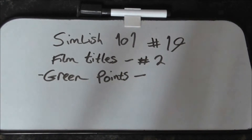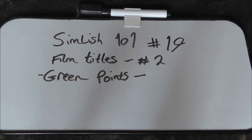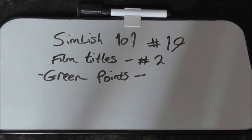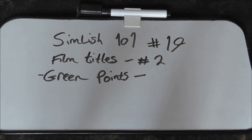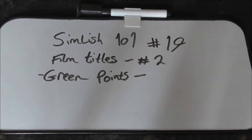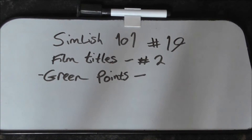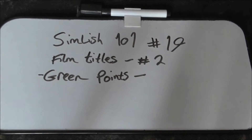Hello everyone, welcome back to Simlish 1-1. This is lesson 19, part 2 of the film title series. We'll be looking at the green points of the credits I set out in the last lesson. During the last lesson we looked at a title card for Simder, and we made a start on the credits for that same film. Last time we looked at the red points, this week we'll look at the green points, and in the next lesson we'll look at the final ones, which are in the yellow points.